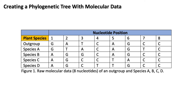When constructing a phylogenetic tree, there are two different routes we can take. We can either construct a phylogenetic tree based on morphological data or with molecular data. In morphological data, we are looking at the physical characteristics of a species — whether a species has hair, feathers, or neither. In molecular data, we are looking at the DNA, the specific nucleic acids, their positions, and comparing them across different species to determine how closely related those species are.